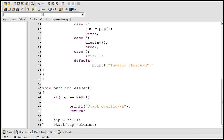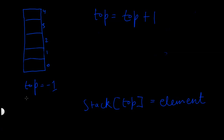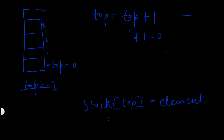These two statements will be responsible for inserting elements into the stack. Initially the value of top is equal to -1 because the stack is empty. When we want to insert a new element, first the value of top is incremented by 1: -1 plus 1 equals 0, so top becomes 0. After that, the next code is executed. The value of top is now 0, and if the value of element is 10, then 10 gets inserted at position 0.